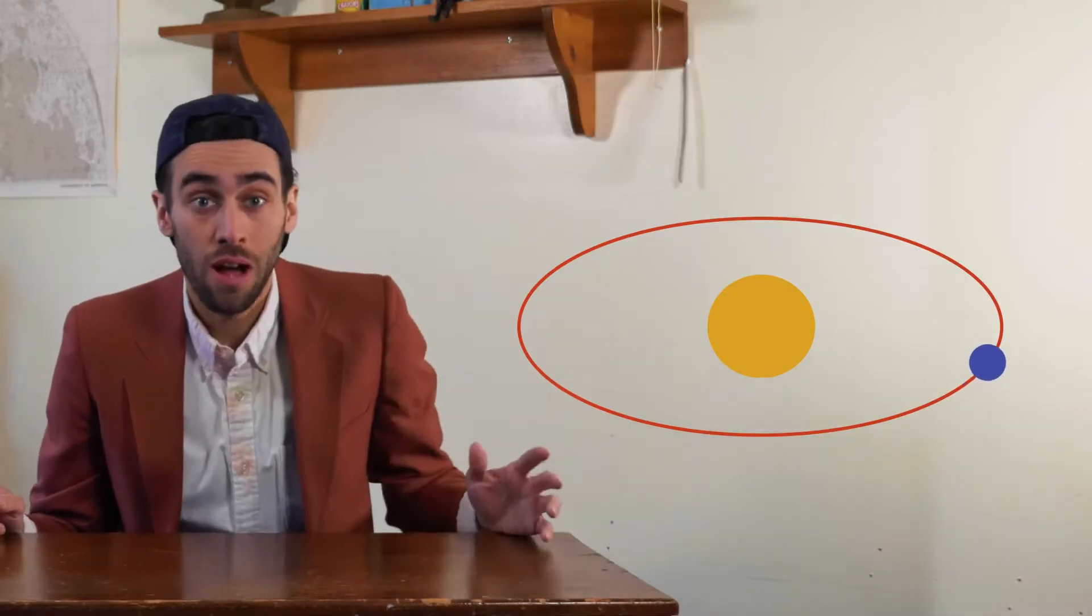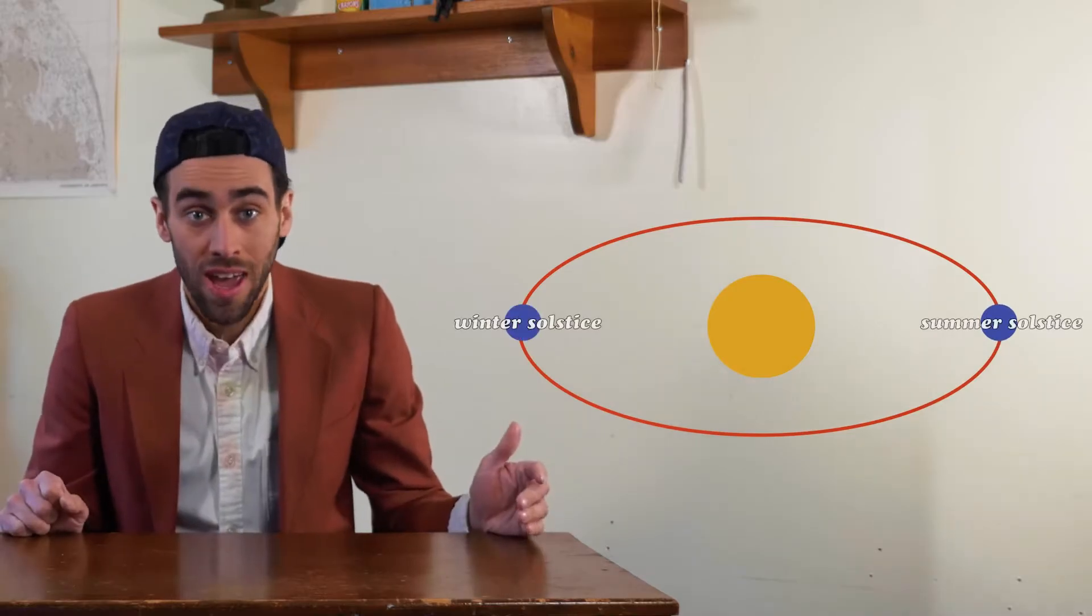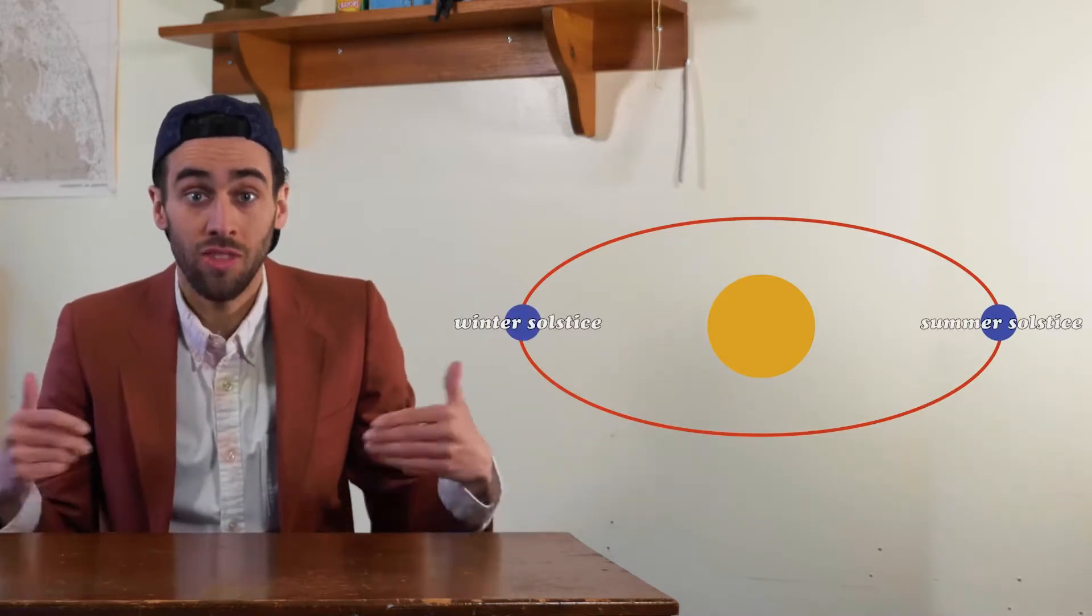All right, so the Earth is revolving around the sun. We know that. And on each end, we have a solstice, okay? The longest or shortest days of the year.